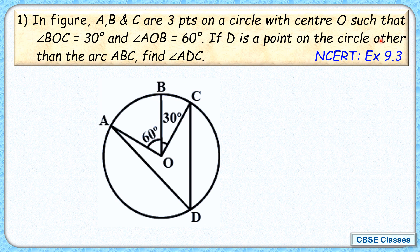D is the point on the circle other than the arc ABC. So this minor arc ABC, D is not here but it's on the major arc CA. Anywhere we can take this point D. We have to find value of angle ADC or we have to find this blue angle.